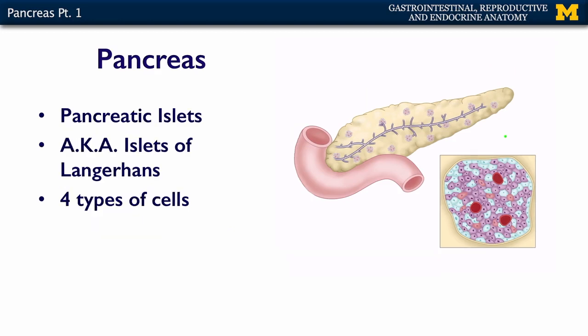The endocrine part of the pancreas is represented by the islets of Langerhans, or pancreatic islets. We're trying to get away from using eponyms, so we'll call them the pancreatic islets. There are four types of cells within the pancreatic islets, and they make four different hormones. In the next segment, we'll talk about each one of these hormones and what it does.